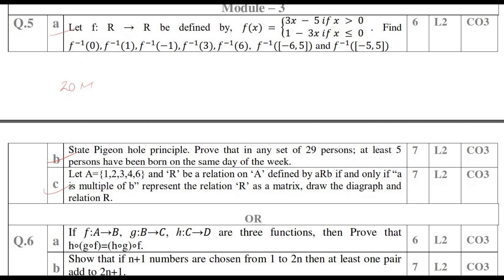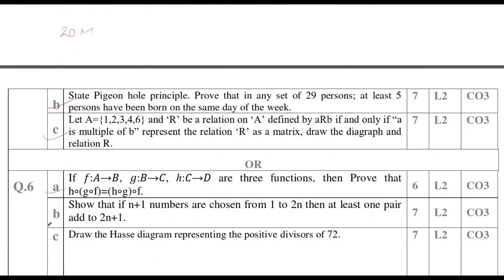You can score 20 out of 20 marks. In the choice question also, you are going to have composition functions and problems like showing that if n+1 numbers are chosen from 1 to 2n, then at least one pair will add to 2n+1. This kind of problem will be there. Apart from that, Hasse diagram and partial order set, POSET problems. Definitely, you can score 20 out of 20 marks in this module.